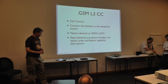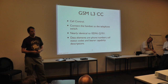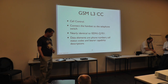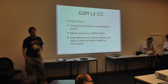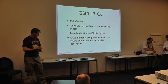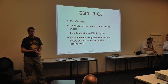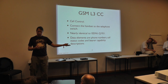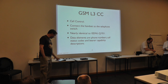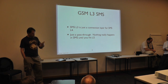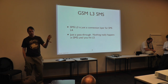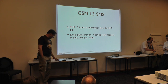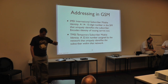Call Control sets up and tears down phone calls. GSM Call Control comes directly from ISDN — it's nearly identical. The data elements in this sub-layer are telephone numbers, call status codes, and bearer capability elements that describe what services a handset supports, such as which codecs it can use. In layer 3, very little actually happens to SMS — layer 3 is really just a pass-through; everything interesting in SMS happens in layers 4 and 5.